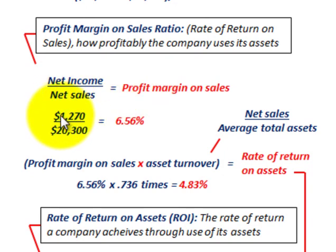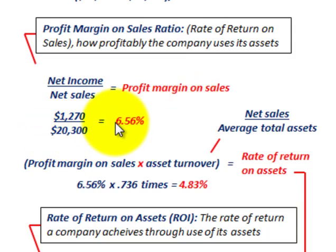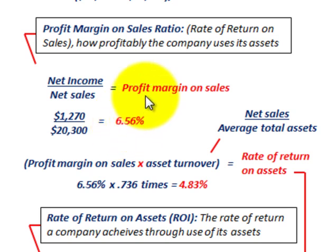Our net income for 20x2 was $1,270,000 divided by the net sales of $20,300,000, and that gives us a percentage of 6.56%. That's our profit margin on sales.